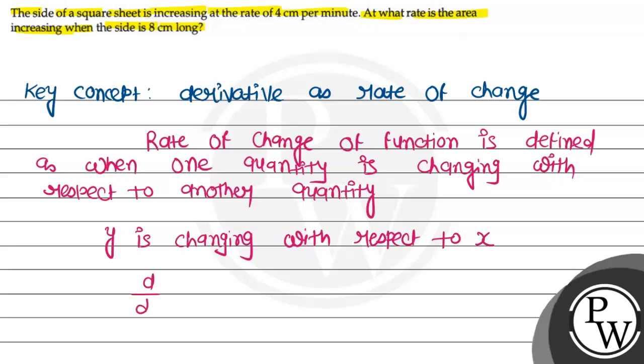Suppose y is changing with respect to x. So we write dy/dx. This is dy/dx - the rate of change. So to find the rate of change, we have to take the first derivative of the function.